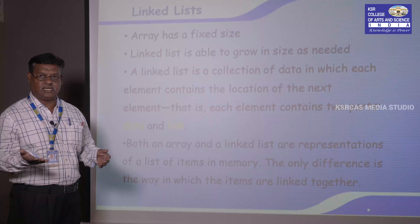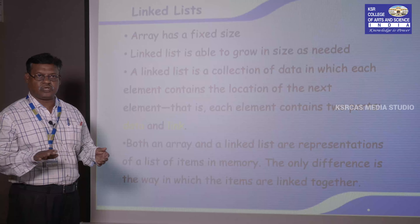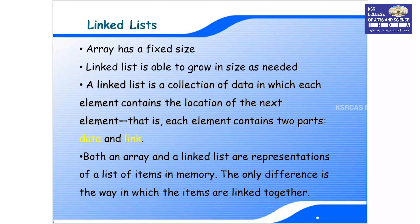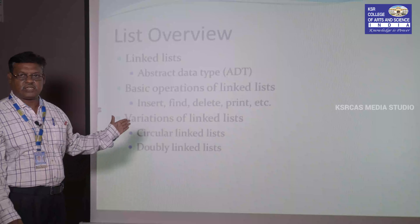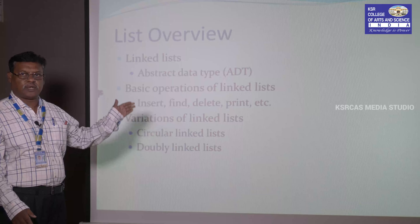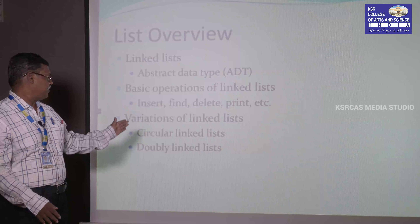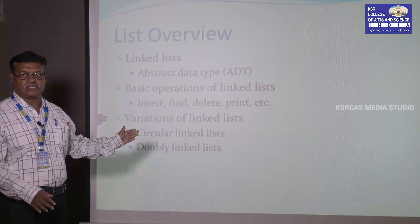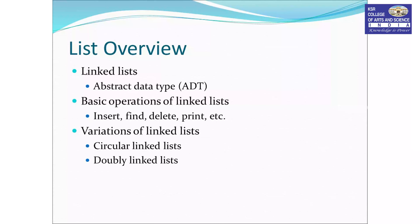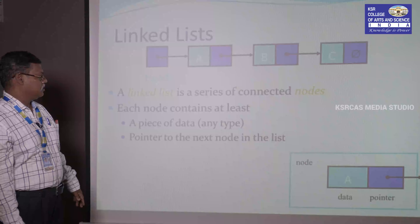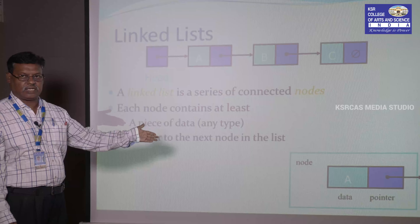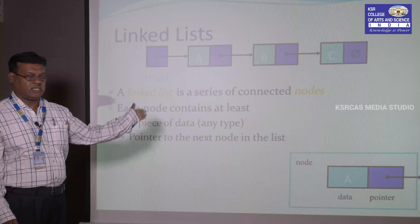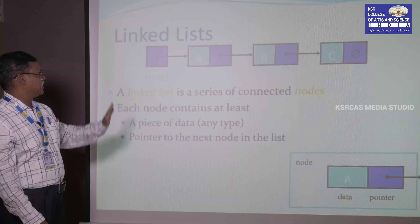The basic operations performed on the linked list are: insert a new node, delete a node, and find whether a particular data is available. Variations on linked list include circular linked list and doubly linked list. In the linked list, the node structure has two parts: data and a pointer. Data stores the actual data and the pointer stores the address of the next node.